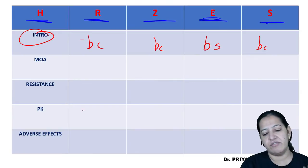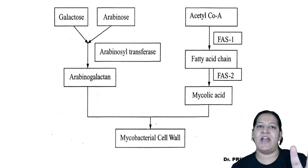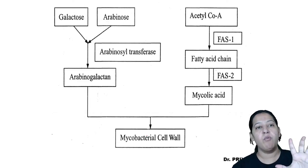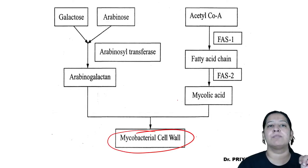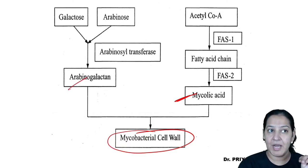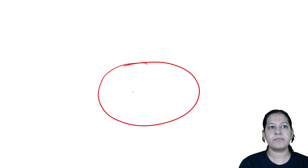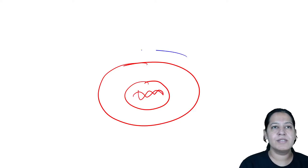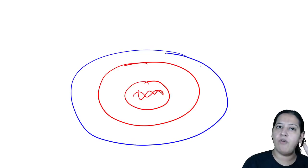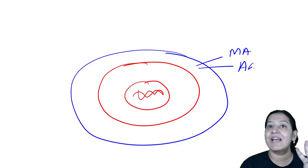The mechanism of action of each drug is based on the mycobacterial cell wall. I explained this diagram in the last lecture. The mycobacterial cell wall is made up of two things: mycolic acid and arabinogalactan. Let me draw the bacteria — this is the mycobacteria, with its nucleus, DNA, cell membrane, and above the membrane is the cell wall made of mycolic acid and arabinogalactan.